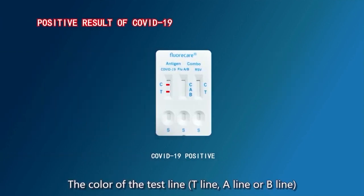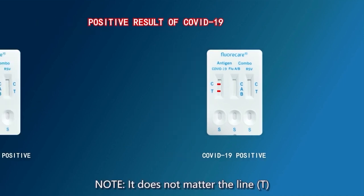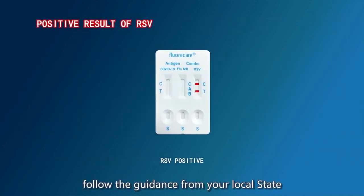The color of the test line (T line, A line, or B line) and control line (C line) means positive test result. Note: it does not matter if the line T, line A, or line B is lighter or darker than the other two. The result is positive. If you have a positive result, follow the guidance from your local state or territory health department for guidance on confirmation testing if necessary, and if unwell, seek medical assistance.